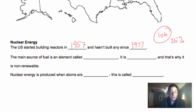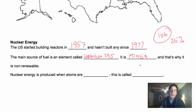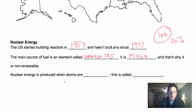The main source of fuel in a nuclear reactor is called uranium — uranium-235. It's mined; it comes out of the ground and we have to dig it up. That's why we consider it non-renewable: it's a mineral, it's a rock, and we cannot replace that rock once we've taken it out and used it. That's why it is a non-renewable resource.